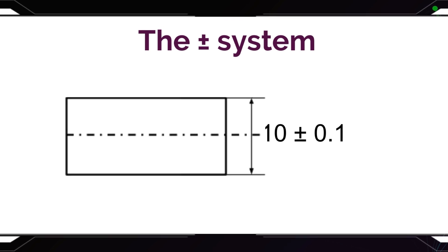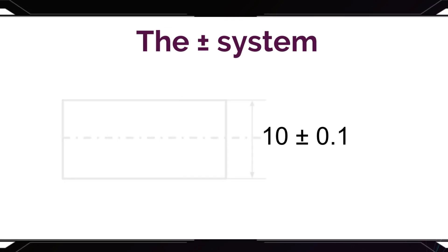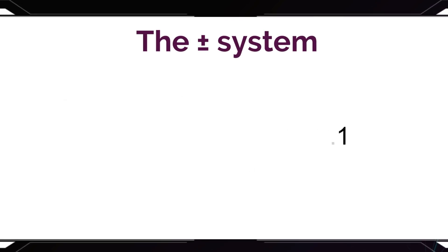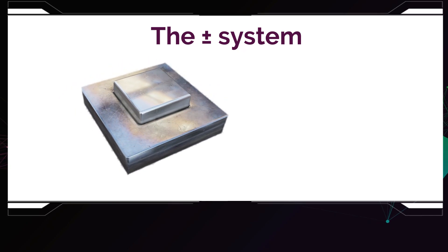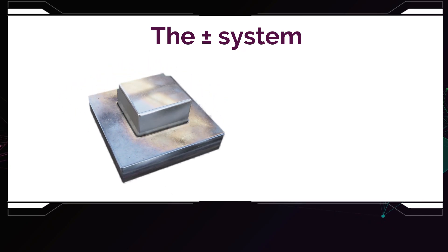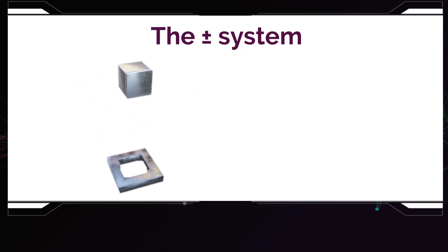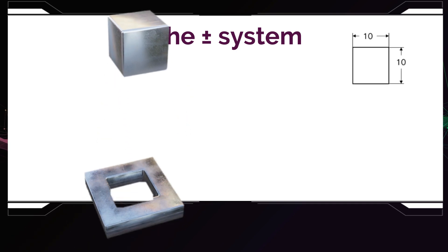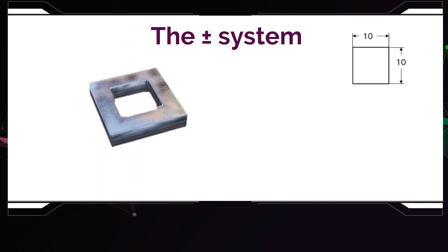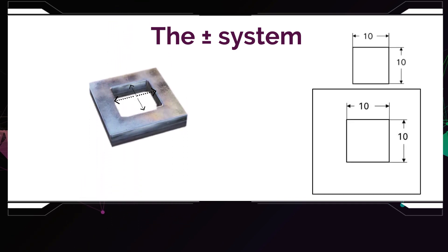But let us look at this example and see if this system really is ideal. If you have this simple assembly here, which is this box that has the dimensions 10x10, and now you have this part with a hole, and it also has the dimensions of 10x10.